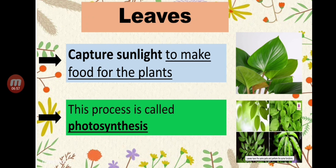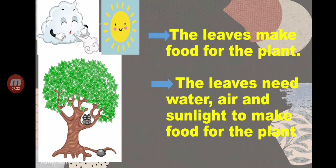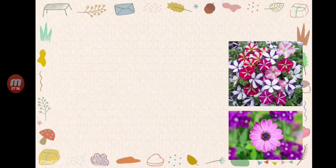This process of leaves capturing sunlight to make food for the plant is called photosynthesis. The leaves make food for the plant, and for this the leaves also need water, air, and sunlight to make food for the plant. So it's not only sunlight — the leaves also need water and air.